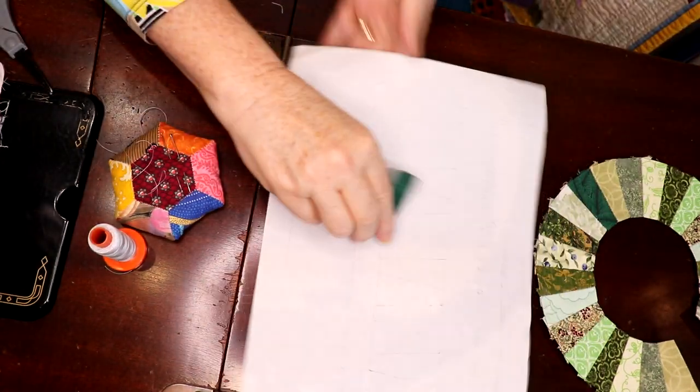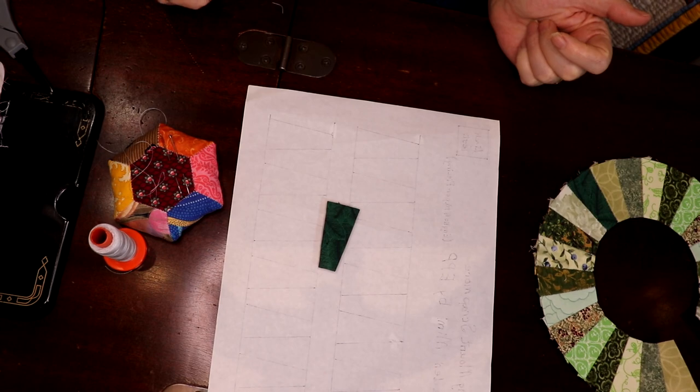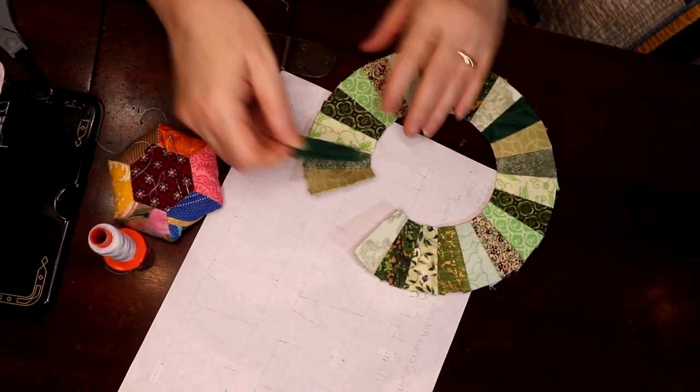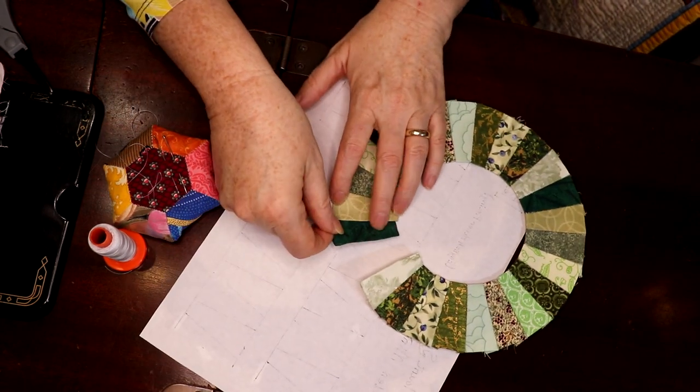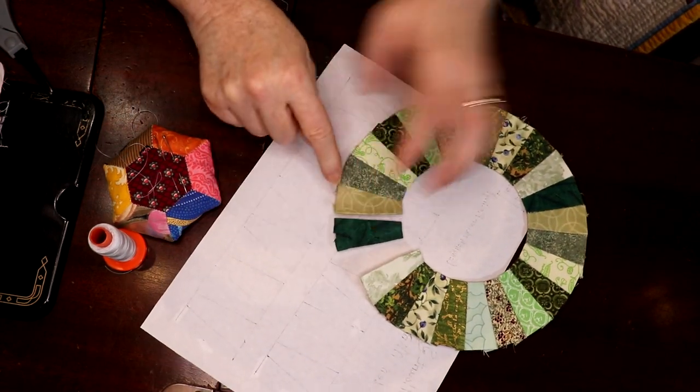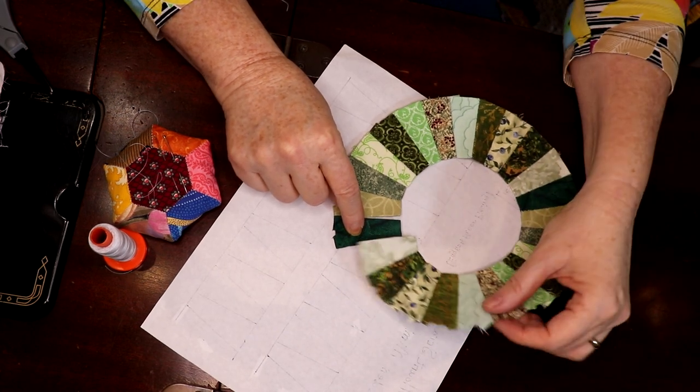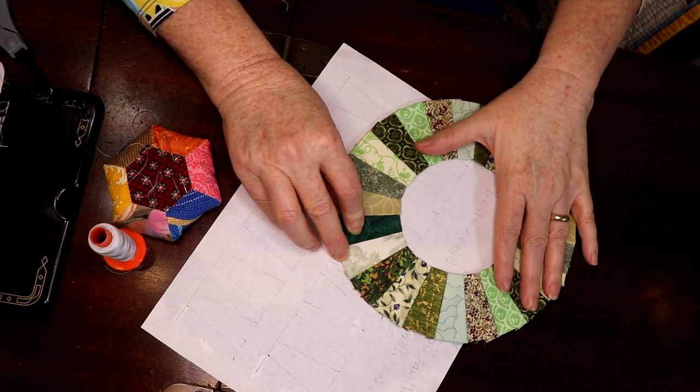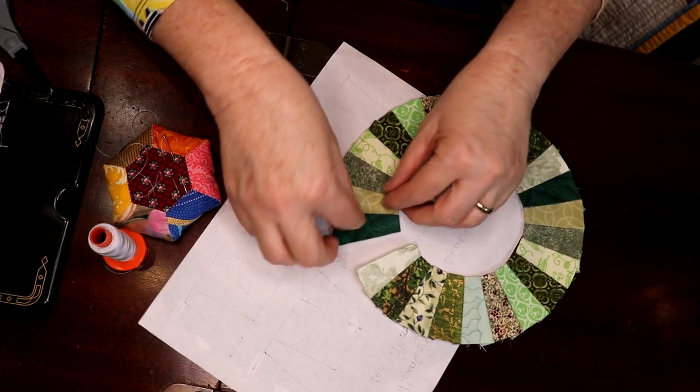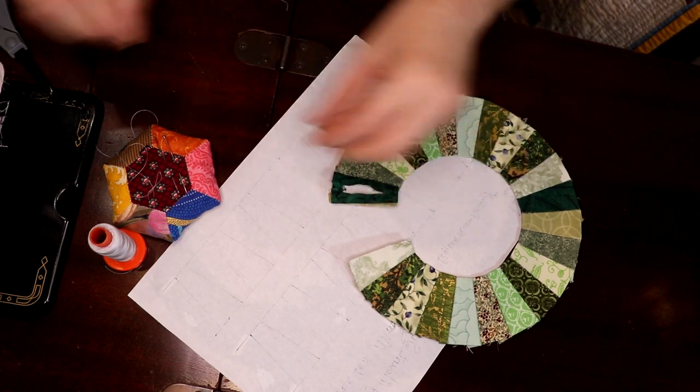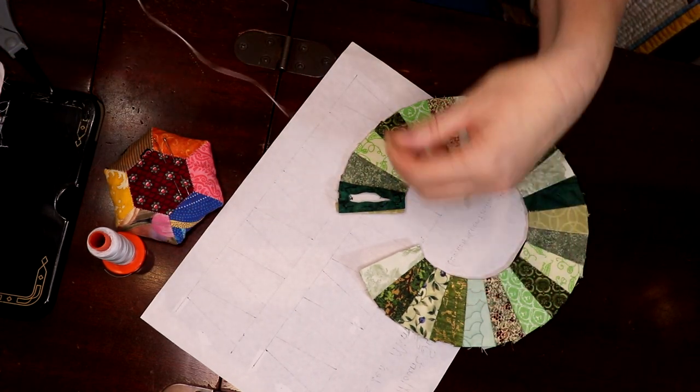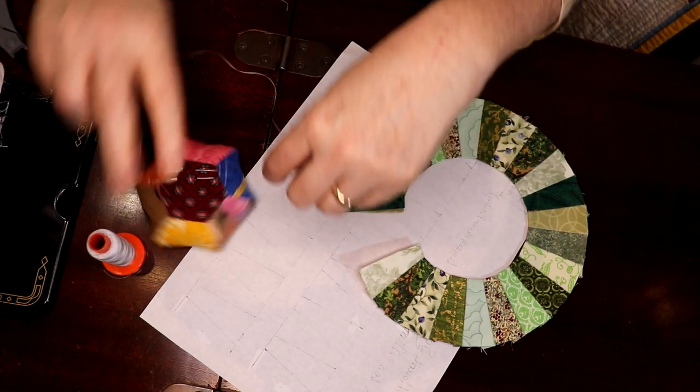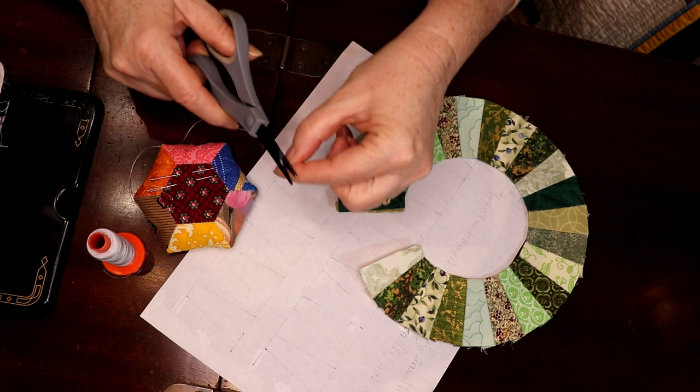Now this is my basted piece. So what I'm going to do now is I'm going to carefully line this basted piece up to this side. Now you can see that this doesn't quite match, but it will come together. It will come together and lay flat. But right now, because of, you know, it's just the way it is, it wants to be that way.